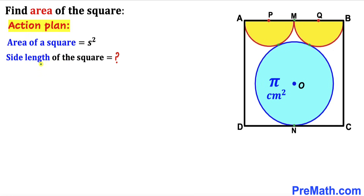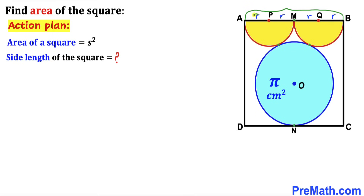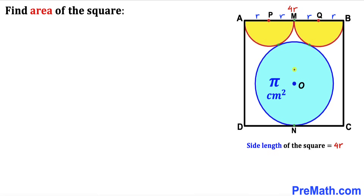We must calculate the side length of the square first. Focusing on the two identical semicircles, AP is the radius of the semicircle, which we'll call lowercase r. Similarly, all four radii along side AB are lowercase r. Therefore, the side length AB of this square is 4 times r — so the side length equals 4r, where r is the radius of these semicircles.